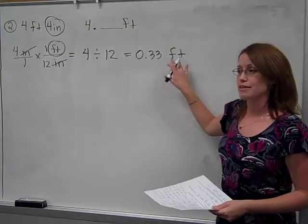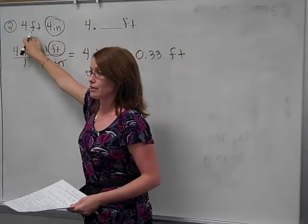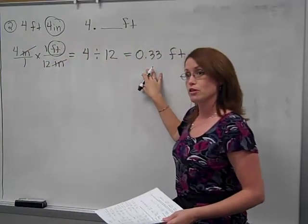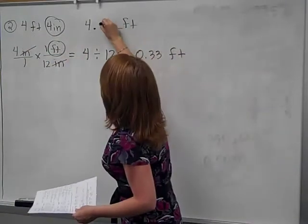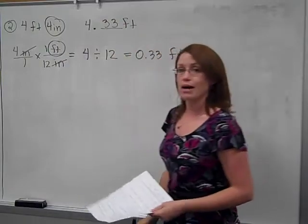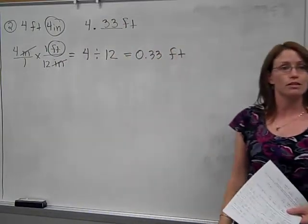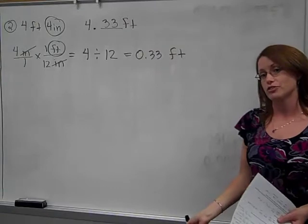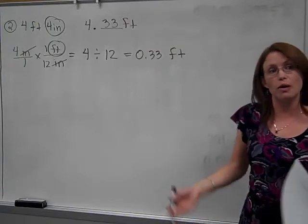So now combine this foot answer with the foot answer I already had. So I add them together. And my final answer, another way that I could tell you my height, is 4.33 feet or 4 and 33 hundredths of a foot. That's possible.